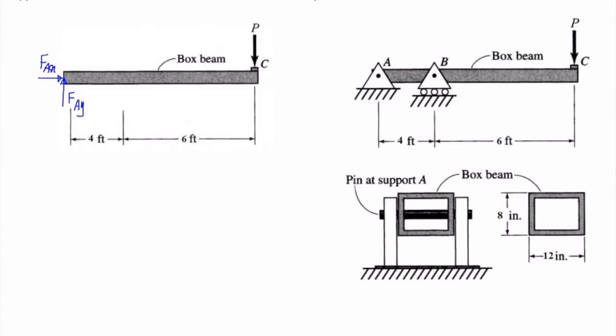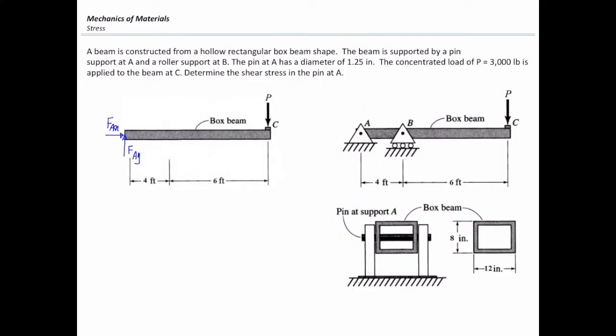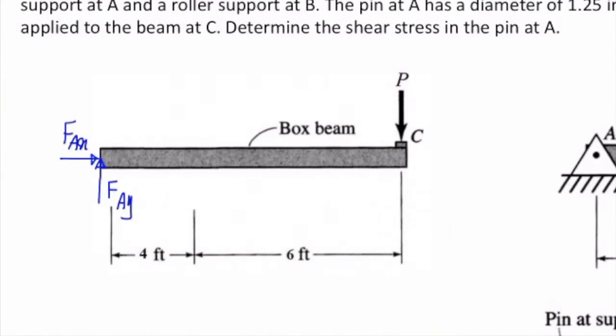This is something that we have done before in statics. I removed A and put two unknown forces, I will call them F sub Ax and F sub Ay. Second step is removing supports at B. That is a roller support. It is restrained just in the vertical direction. So I will just put one unknown force in vertical direction, I will call that F sub By.